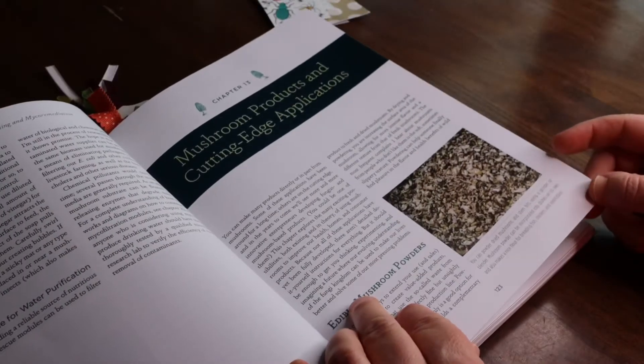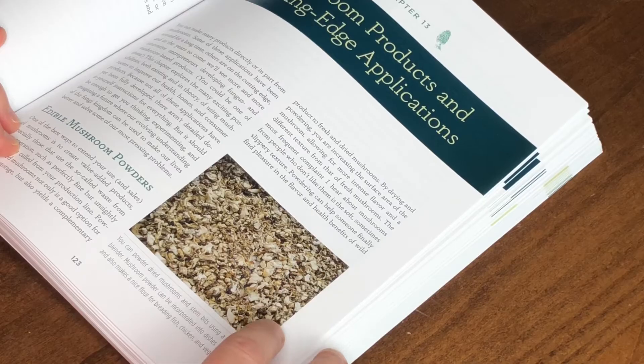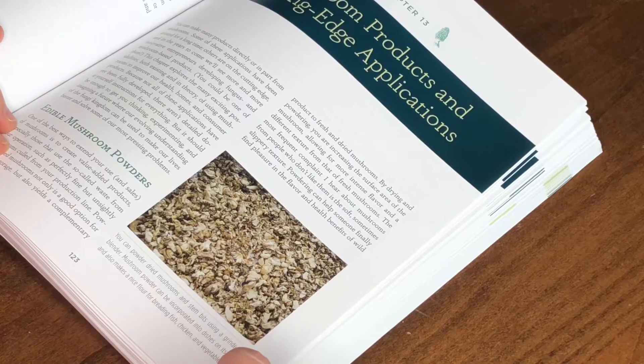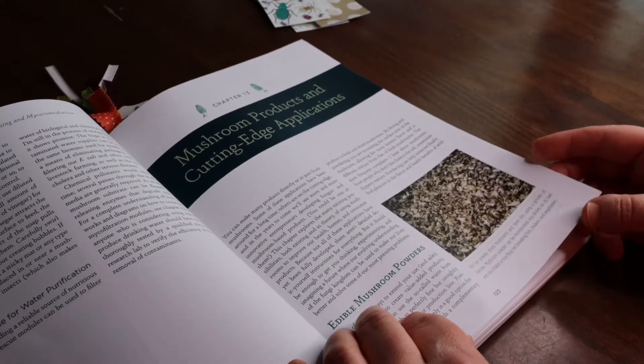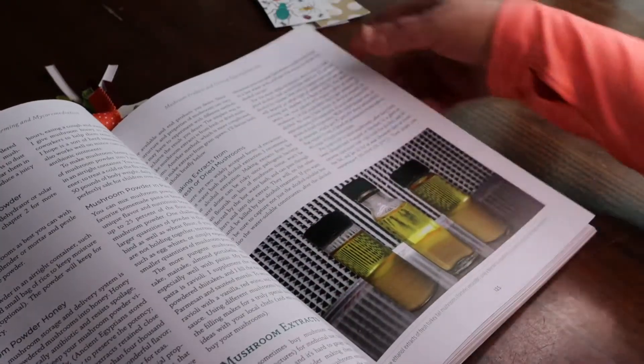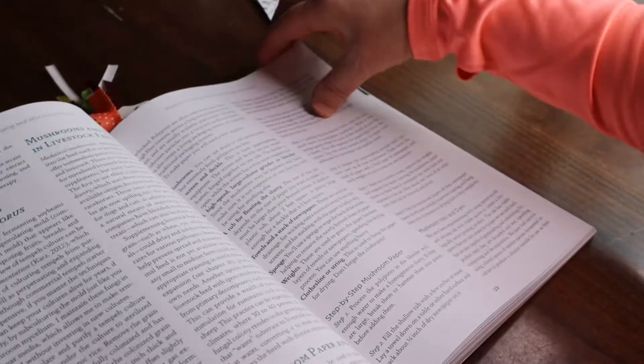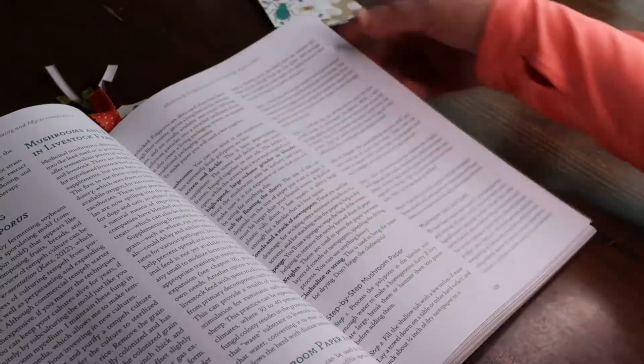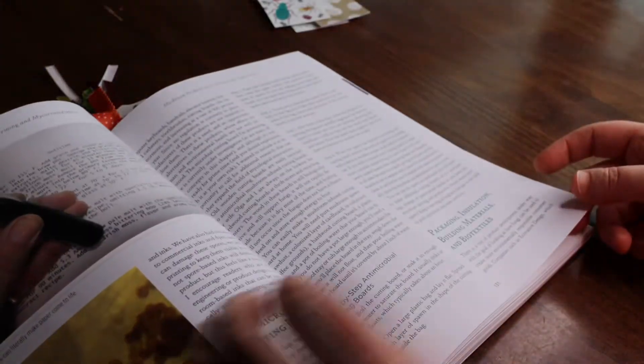This chapter, Mushroom Products and Cutting Edge Applications, was a favorite chapter about thinking outside of the box when it comes to using mushrooms, like mushroom extracts, using mushrooms for animal feed, and making paper and ink out of mushrooms. Some really inspiring and innovative stuff worth the price of the book just to get your brain working overtime on how to use mushrooms.